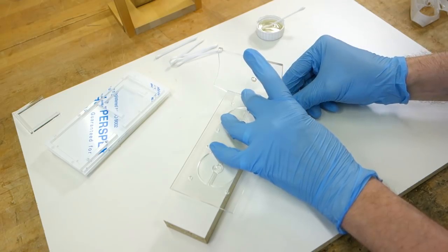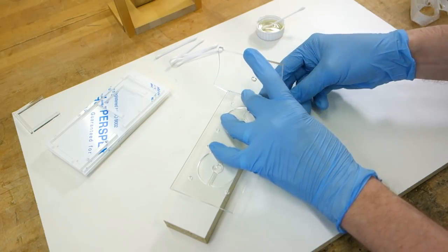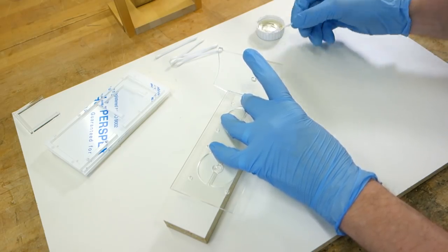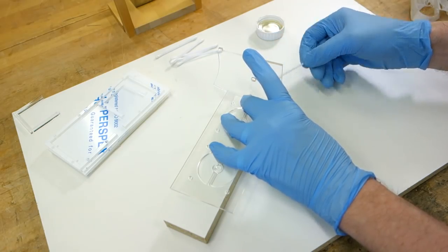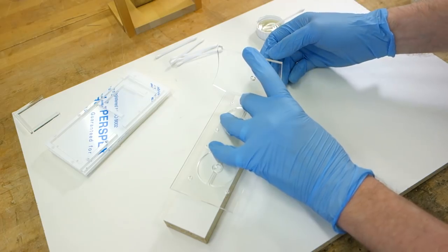Since this glue is also free flowing, the easiest way to apply it is to first put the pieces together dry, and then use a pipette, syringe, or a soaked q-tip and allow the glue to be pulled into the joint with capillary forces.